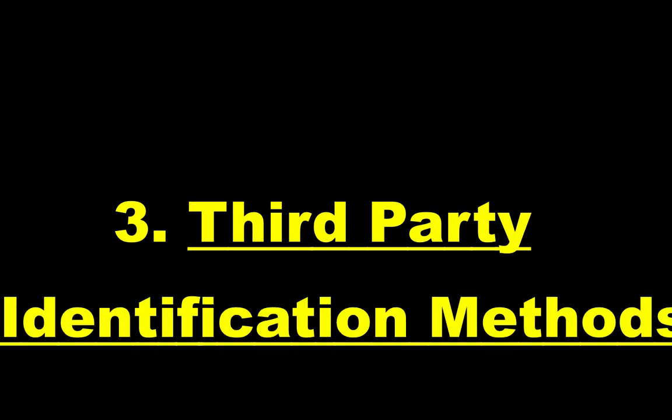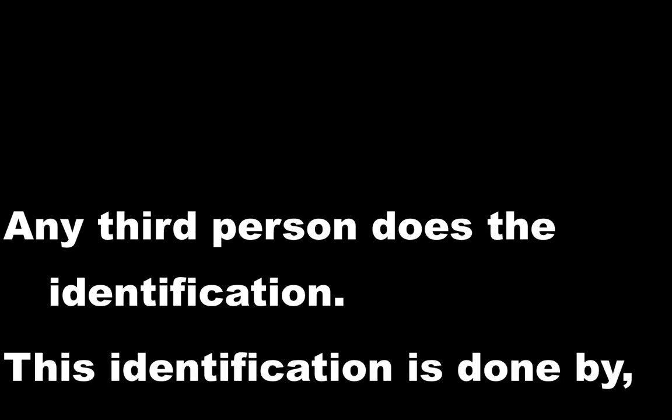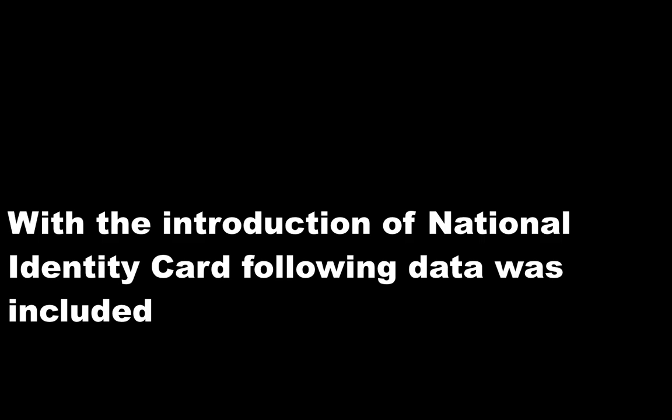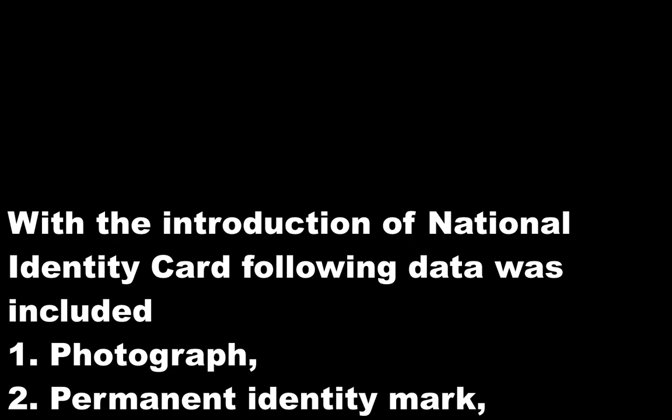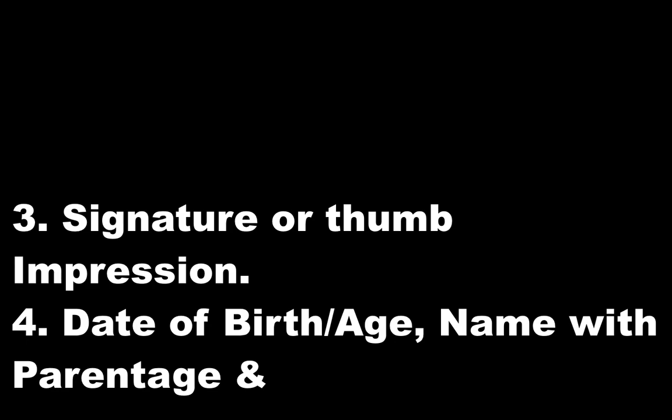The third party method means any third person does the identification — by relatives, friends, or the police. The standard method of identification in Pakistan involves the national identity card, which includes photographs, permanent identity marks such as a mole or scar mark, signature or thumb impression, date of birth, age, name, parent's name, and residential address.